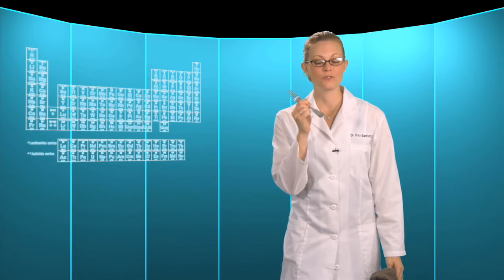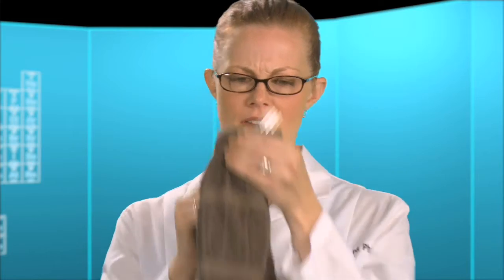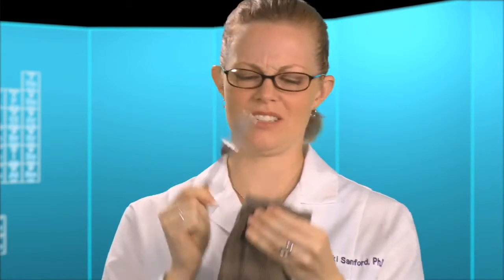The tarnish on this fork is actually called silver sulfide. It comes from the silver in the fork reacting with sulfur in the atmosphere. You can try rubbing it off with polishes, but you're actually going to lose some of your fork.